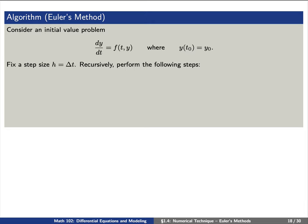The first part of the algorithm says, fix a step size h, which we'll denote by delta t. Recursively, we're going to perform the following four steps.